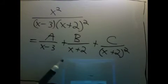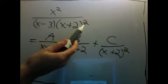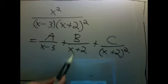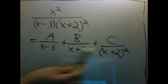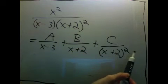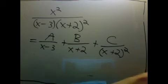And this is always the way it'll be. If you have something to a power higher than 1 here, you have to take terms like this, where it's to the first power and to the second power, and if this had been to the fifth power, we'd have to take a term with this to the third, fourth, and fifth.